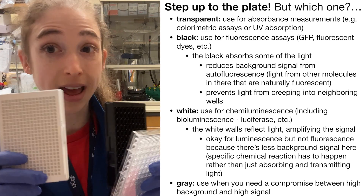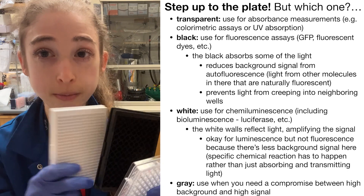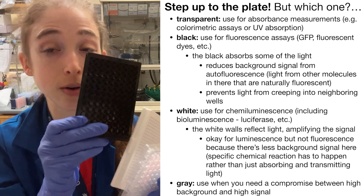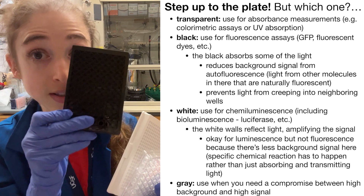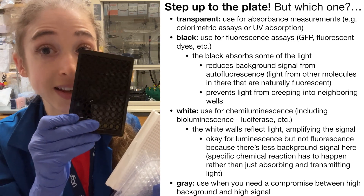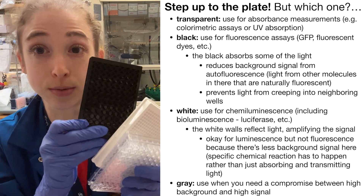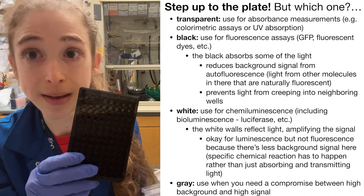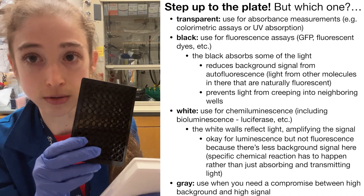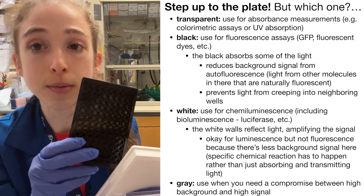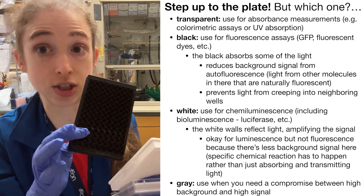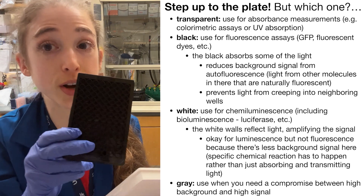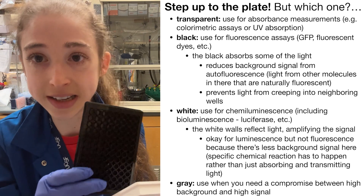And importantly, you don't have that much background, as I'll get into. With fluorescence, you want to use the black walls. A lot of the light is going to get absorbed by the walls, and you might be thinking this is bad because it's going to steal all your signal. But with fluorescence, you're typically starting off with a stronger signal, and you have the issue of a lot of background noise.